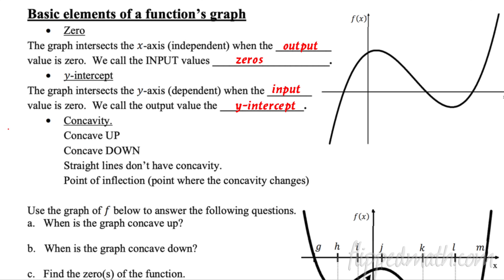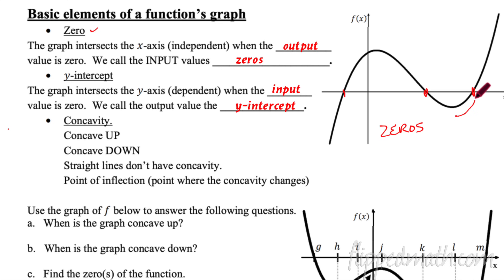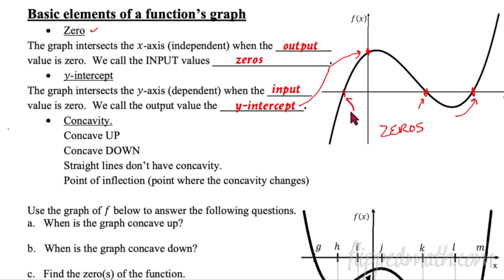Now let's review the important parts of a graph. The first is called the zero — the graph intersects the x-axis (the horizontal one) when the output value is zero. Those input values where the output is zero are called zeros, and there can be multiple zeros. On the other axis, if the input x equals zero, we call that output value the y-intercept. We can have multiple zeros but only one y-intercept — if we had another one, it wouldn't be a function because then you'd have two outputs.